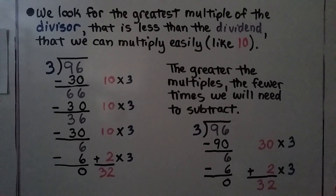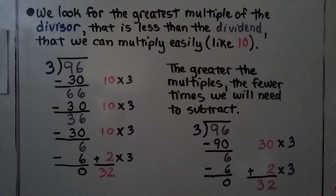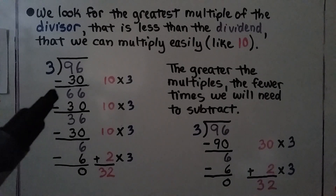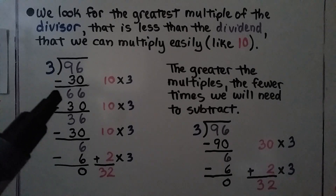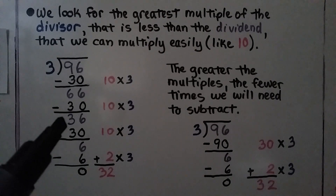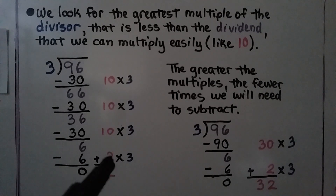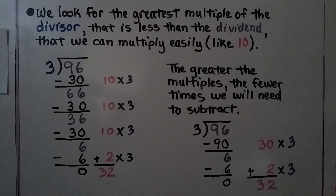We look for the greatest multiple of the divisor that is less than the dividend — something we can multiply easily, like times 10. So we do 10 times the divisor, 10 times 3. We have 96 divided by 3. We can take away 30 as 10 times 3. The difference is 66. We take away another 30 — that difference is 36. We take away another 30, and the difference is 6. And 2 times 3 is 6. We take away a 6 and write 0. We have 10 plus 10 plus 10 plus 2. The quotient is 32.